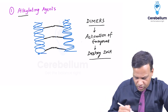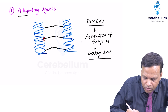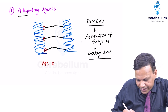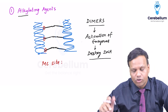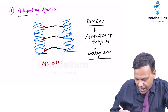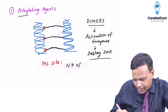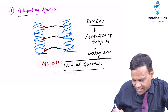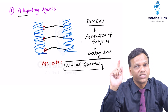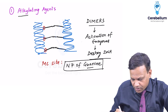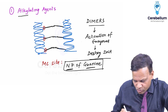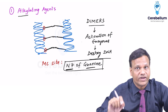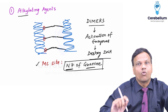An important question asked is: where do they attach the alkyl group? What is the most common site of alkylation? You need to remember it is N7 of guanine. We have four nitrogenous bases in DNA — adenine, guanine, cytosine, thymine. On the chemical structure of guanine, the nitrogen at the seventh position is the most common site of alkylation: N7 of guanine.